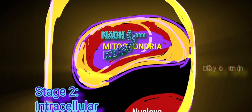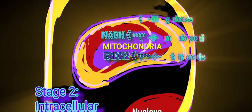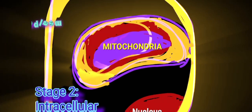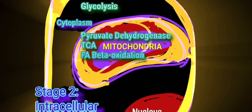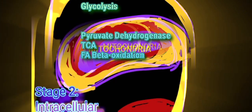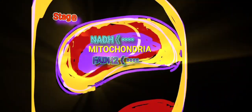Catabolism occurs either in the cytoplasm or the mitochondria to produce high-energy molecules. Of the four major catabolic pathways, only glycolysis occurs in the cytoplasm, whereas pyruvate dehydrogenase, the TCA cycle, and fatty acid beta oxidation occur inside the mitochondria. The NADH and FADH2 produced by the three mitochondrial catabolic pathways will be present in the mitochondrial matrix and will be directly accessible for the third stage of catabolism, which occurs inside the inner mitochondrial membrane.